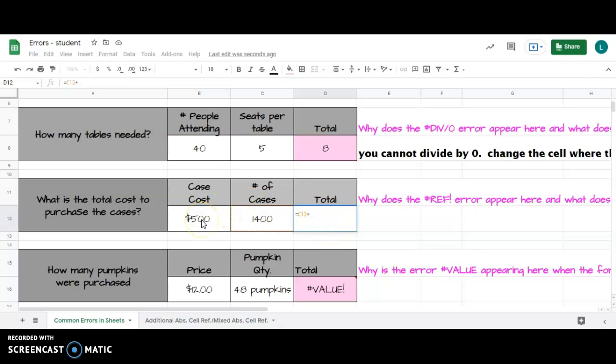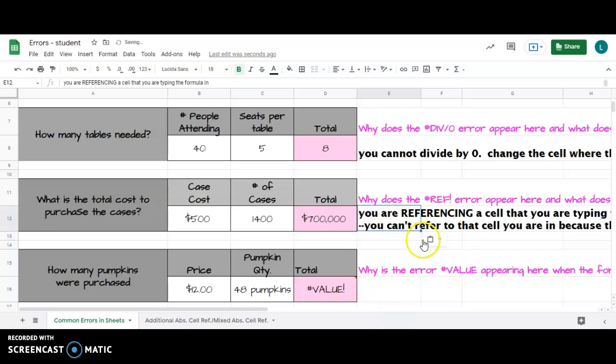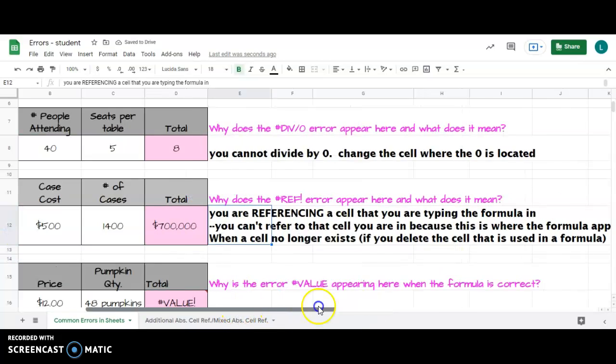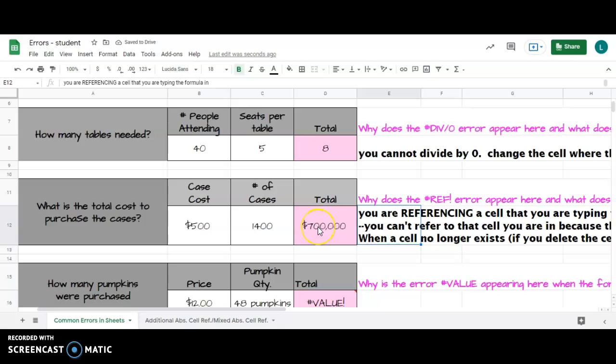I should have referenced B12. So C12 times B12 is 700,000. So why did that REF error appear? Because I am referencing a cell that I'm actually typing in, and I'm referencing that cell within my formula.